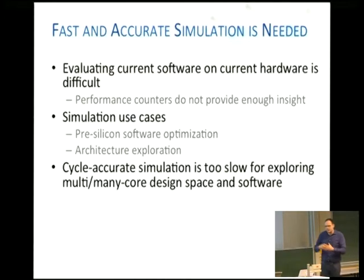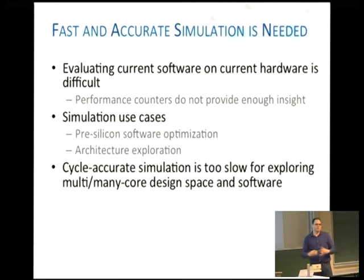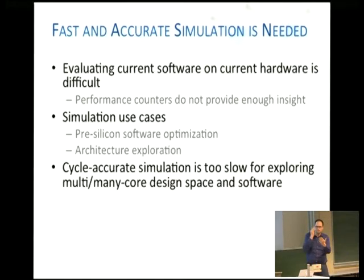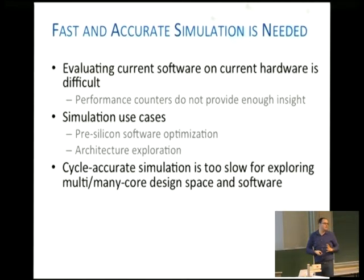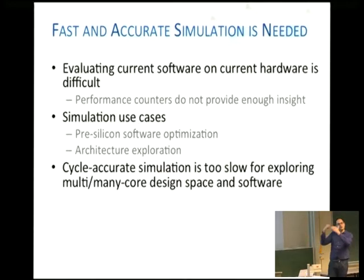Cycle-accurate simulation tends to be too slow for exploring the design space. There are a few types of simulation — simulation means emulation, basically, we're pretending we're a different type of machine that hasn't been invented yet. You can do it at the cycle level, very precise, or you can take the abstraction up a little bit and do approximations to get very close to a cycle-level result. In Sniper, we raised the level of abstraction to give a very accurate result in a much faster way.